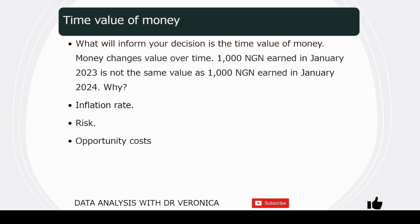Opportunity costs are things that you had to forego for the decision that you take now. If the debtor pays you your 800,000 Naira, you could decide to get a beautiful piece of furniture or a television set with the money. But the fact that the debtor offers to pay you in three years time means you have to forego those things. These three factors combine to make money change value over time.